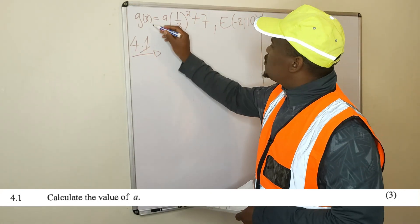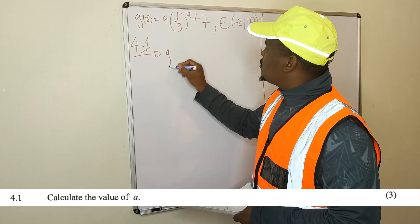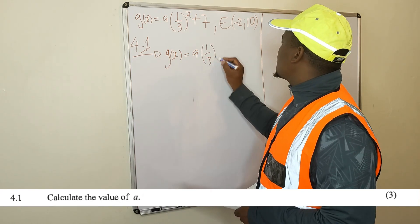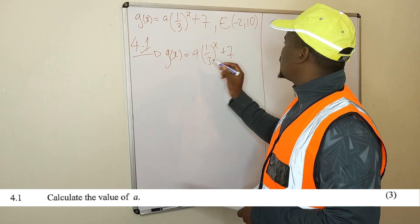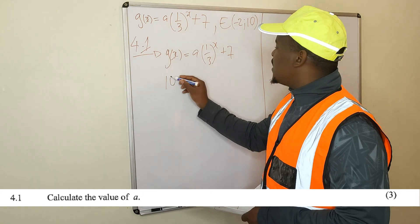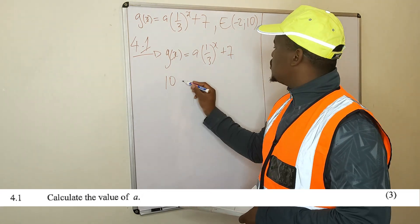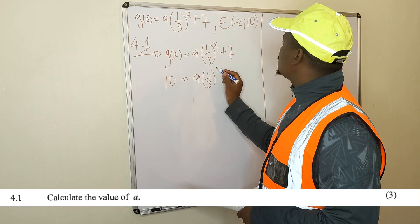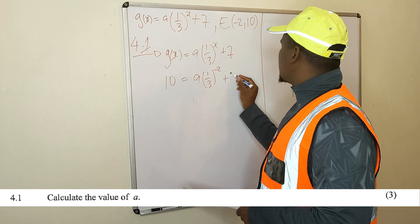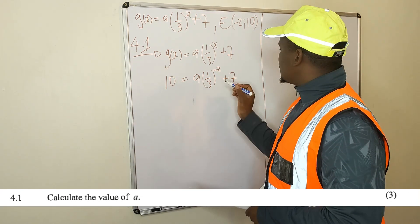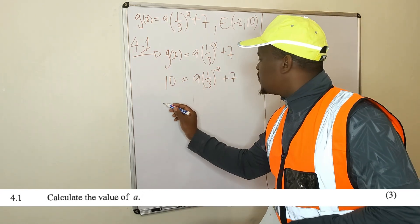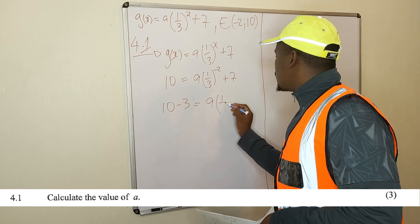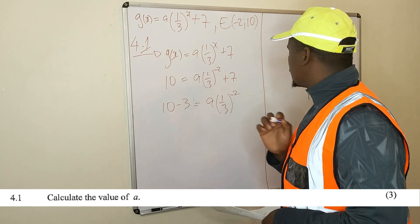So you say: g of x is equal to a times (1/3) raised to x, plus 7. What is g of x? G of x is 10. So: 10 is equal to a times (1/3) raised to x, where x is -2, plus 7. Then you transpose the 7 to the other side: 10 minus 7 equals a times (1/3) raised to -2.